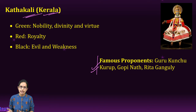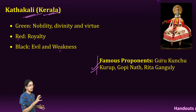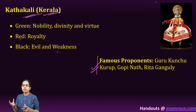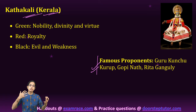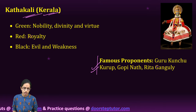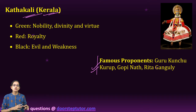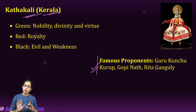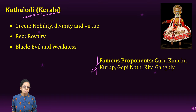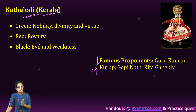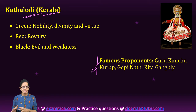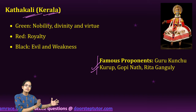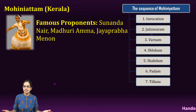Kathakali represents emotions with minimum movement of legs — mostly it is the emotion of the body and expression of the eyes that are taken into account. A brass lamp is used for lighting and it is usually performed in open-air theater. Themes revolve around Ramayana, Mahabharata, and Bhagavat Purana, and most present-day Kathakali is also equated with the plays of Shakespeare.